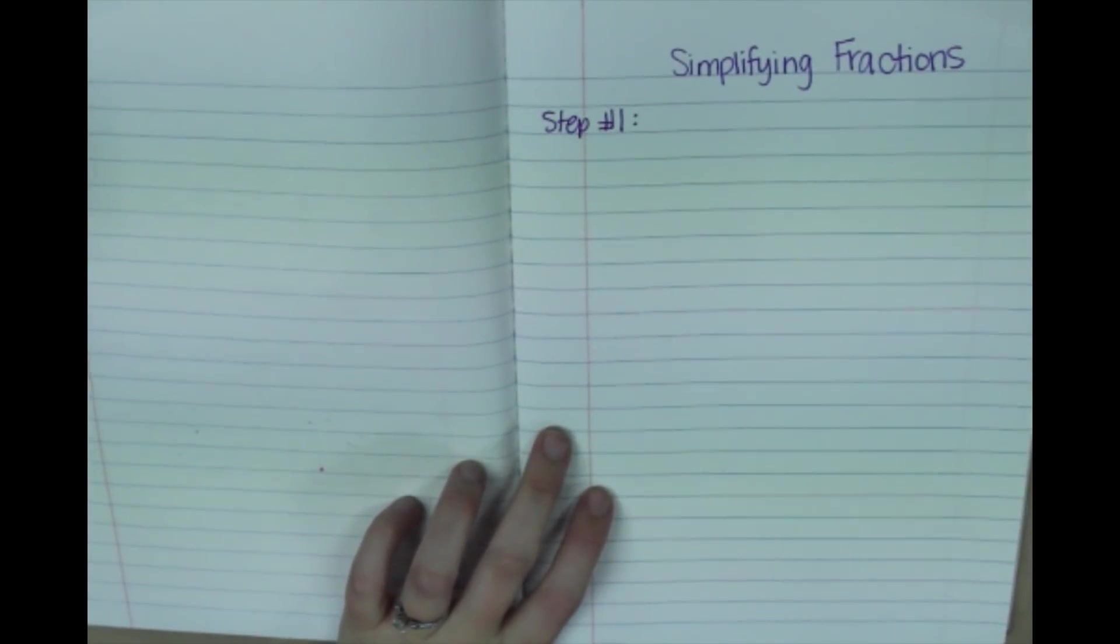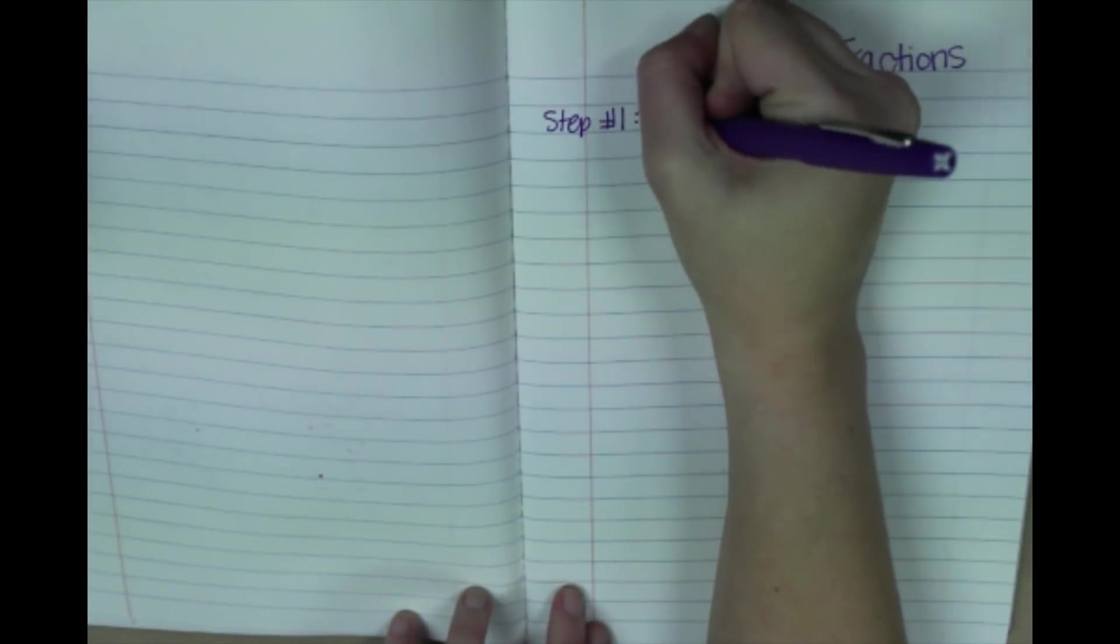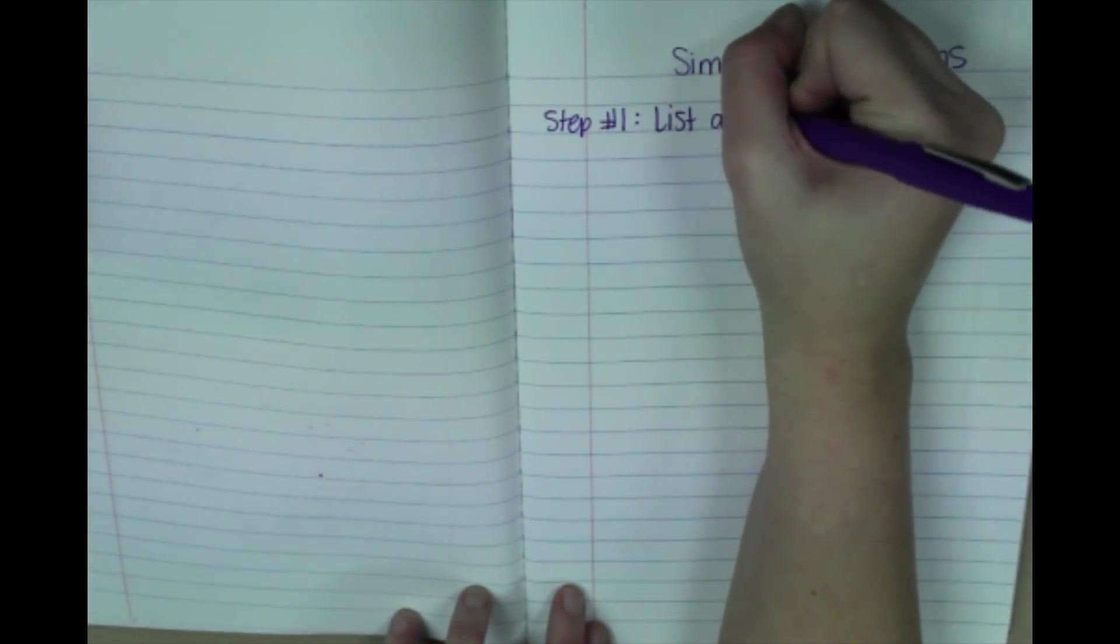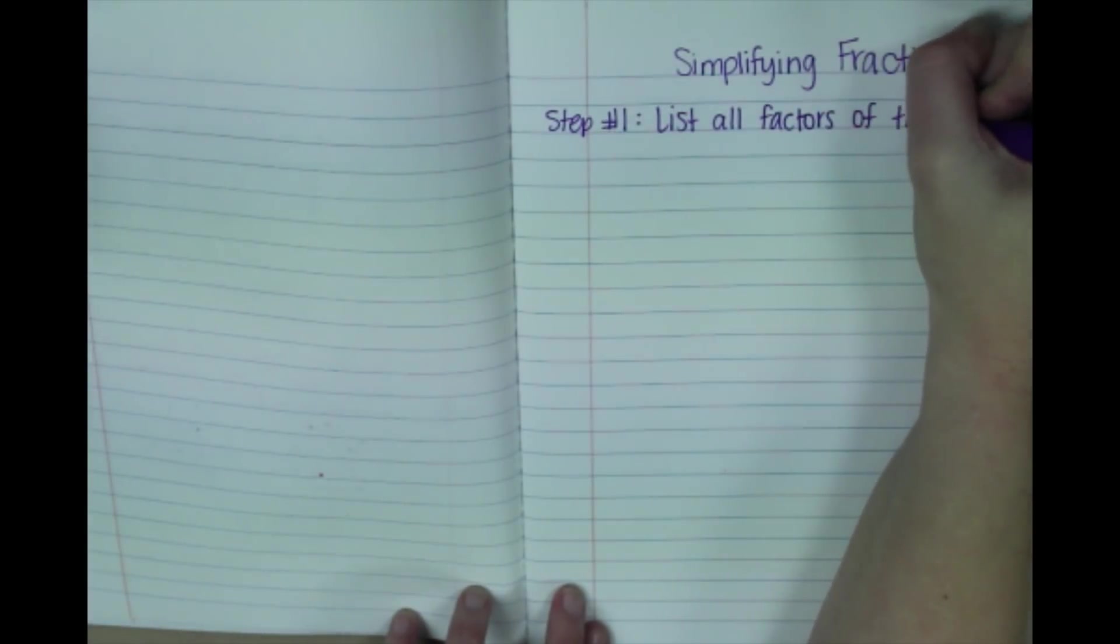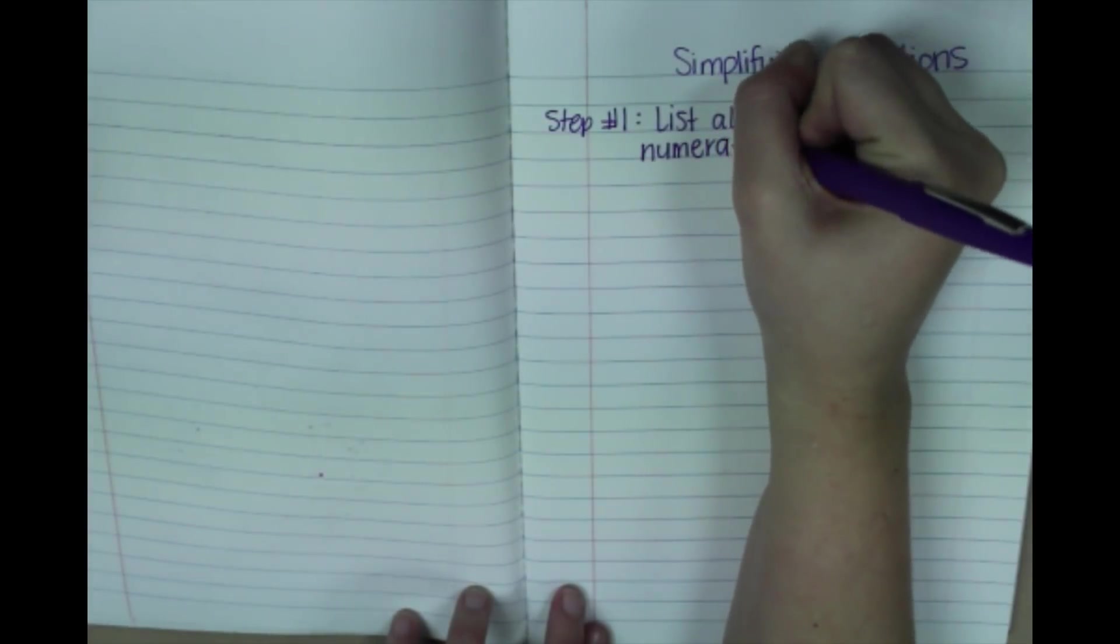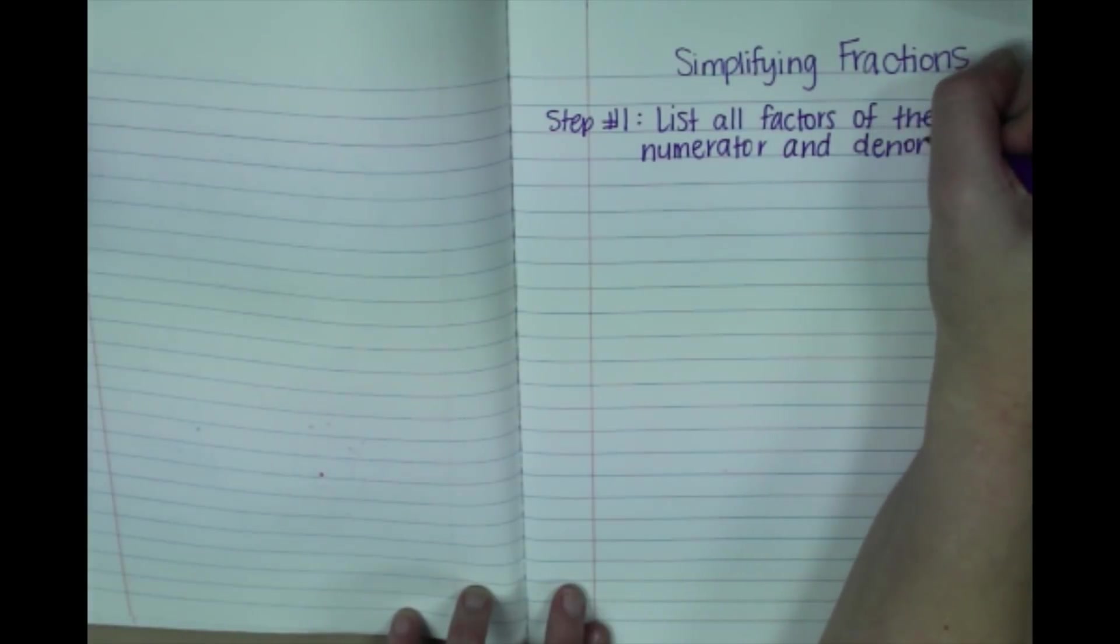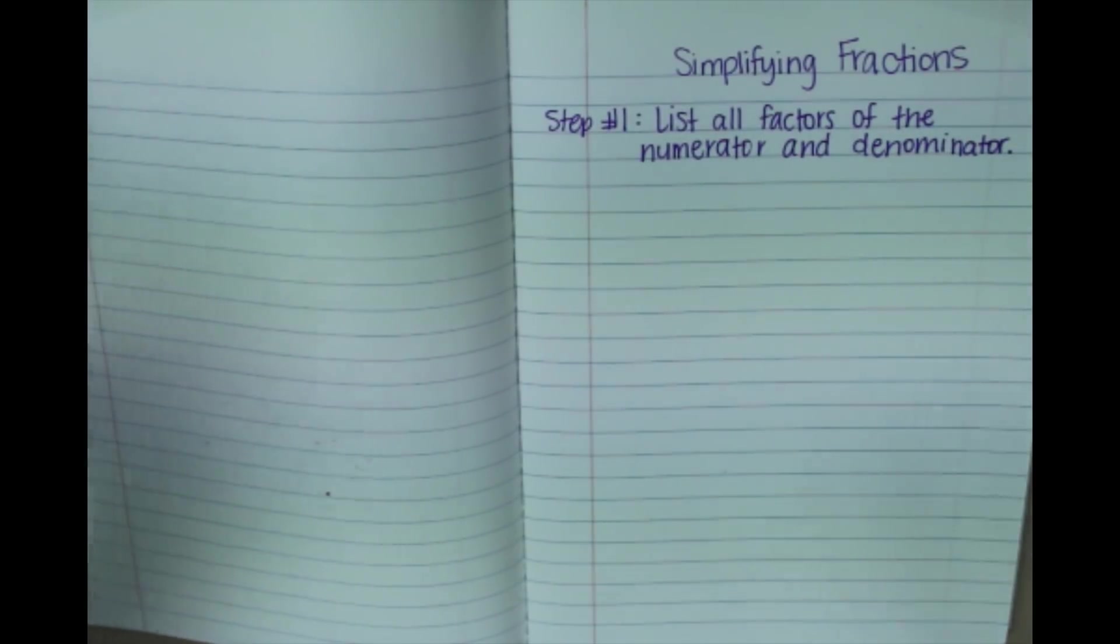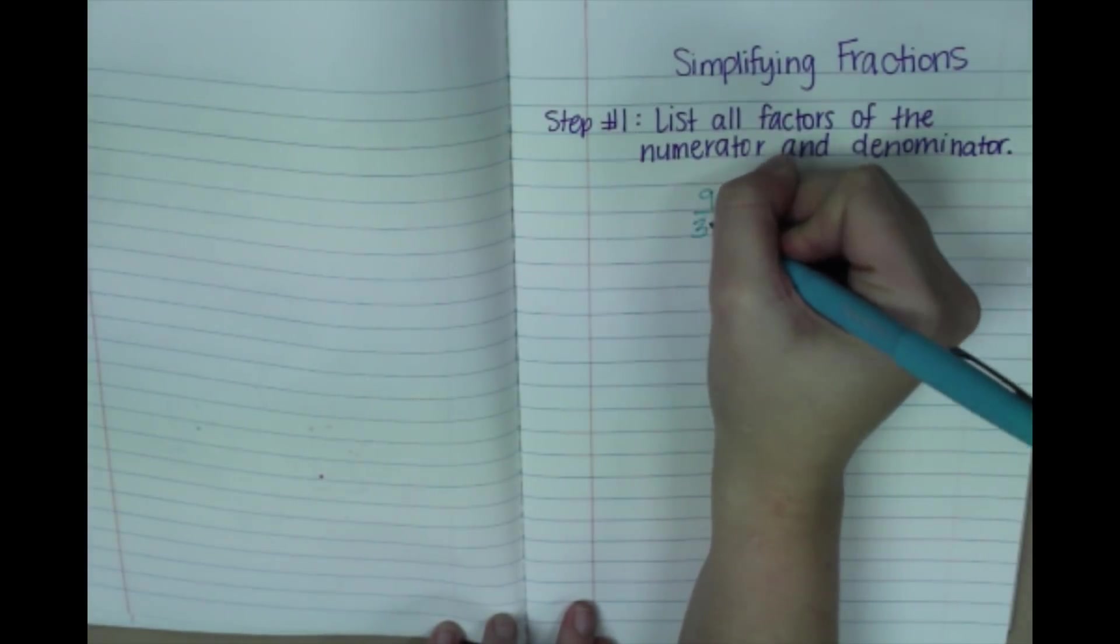Is going to be to take your fraction and you're going to list all of the factors of the numerator and the denominator. So list all factors of the numerator and denominator. So let's look at what that would look like. Let's take the fraction 9 over 33.